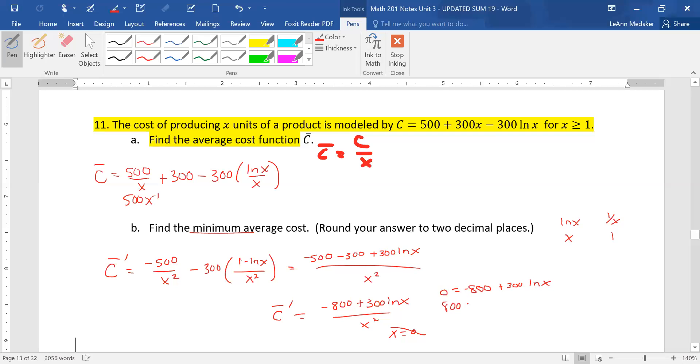So we'll add the 800 over, divide by 300, so that makes this 8 thirds, and then we can use, remember the fact that this is an E here, to rewrite this in exponential form. So it's E to the 8 thirds equals X. So then we have 8 divided by 3, and then we're going to use that as our exponent on the E. So it's about 14.39.